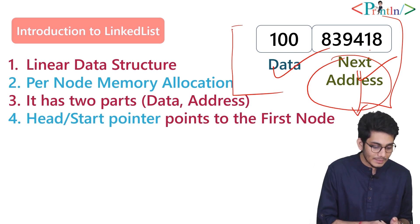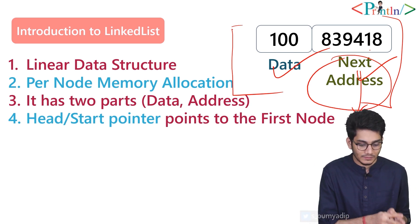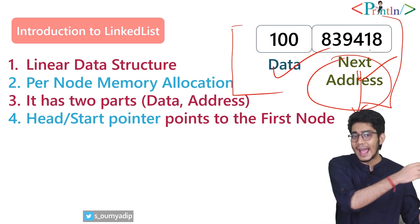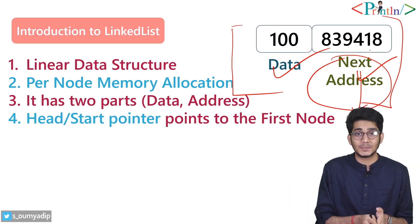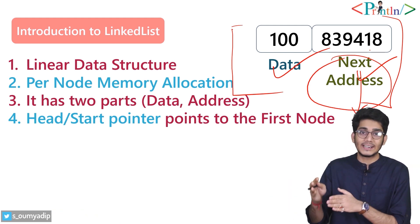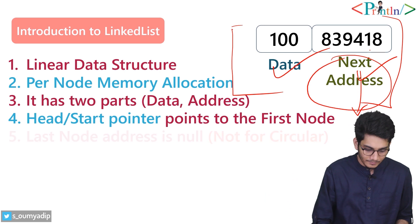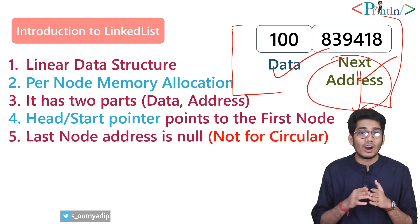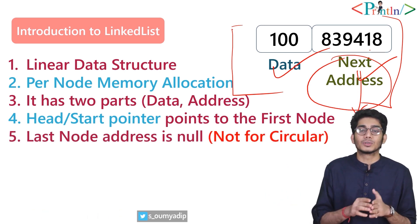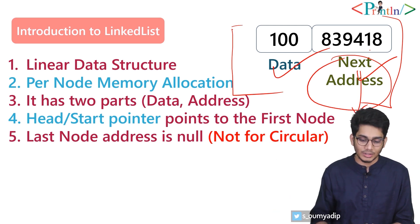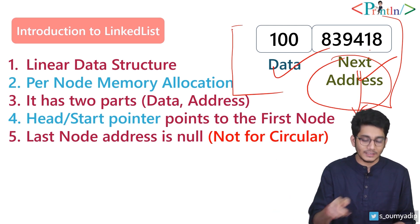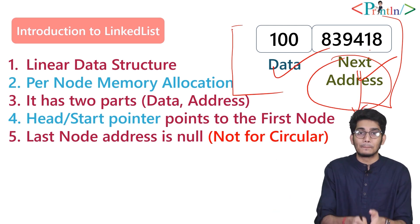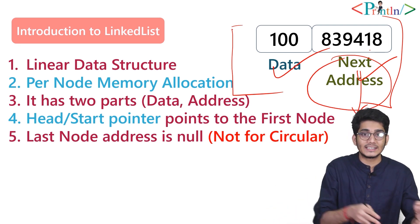This next address portion stores the address of the next node. The most important part of the linked list is the head pointer — you have to access every node using the head pointer. The next address of the last node of the linked list will be null; that is the termination point for the linked list.